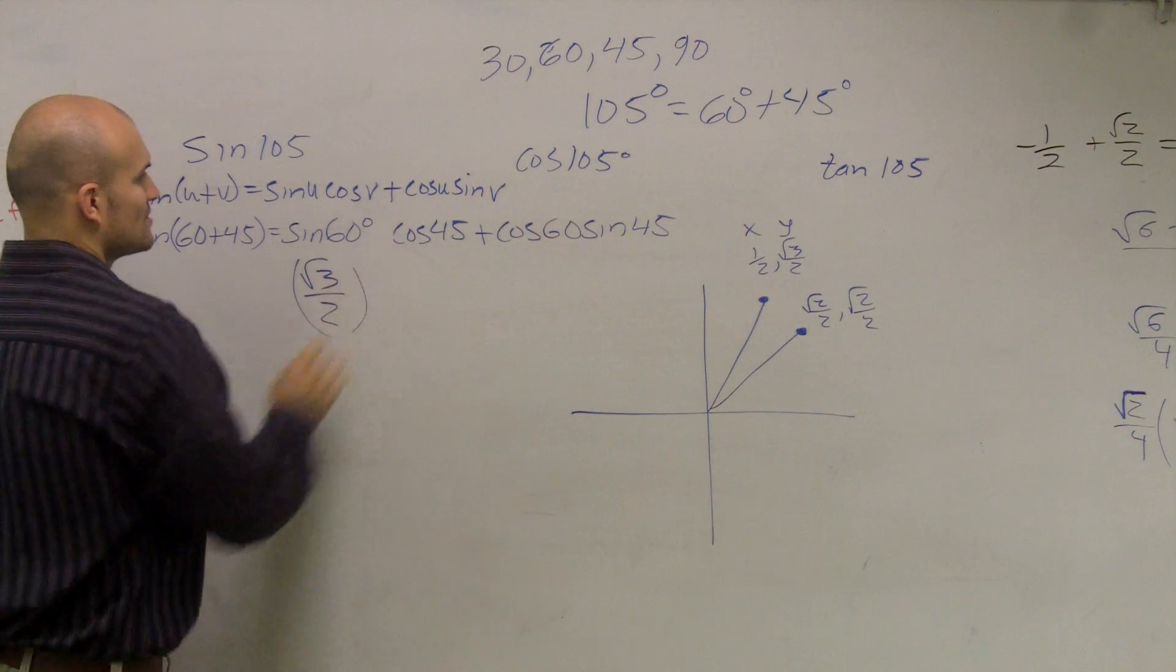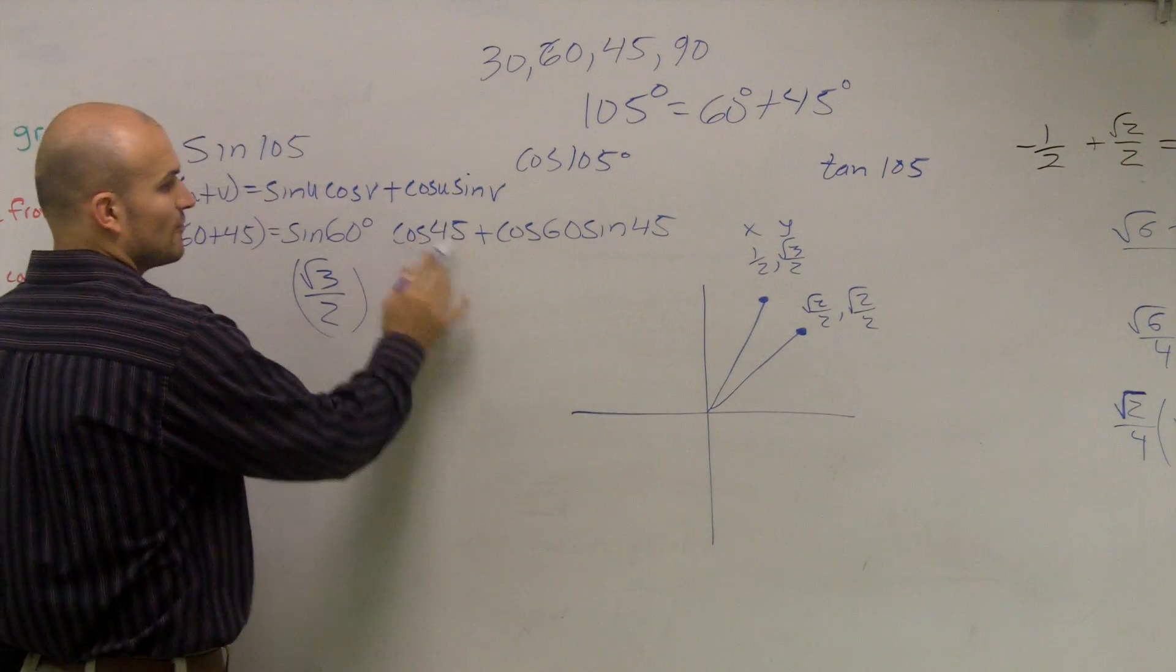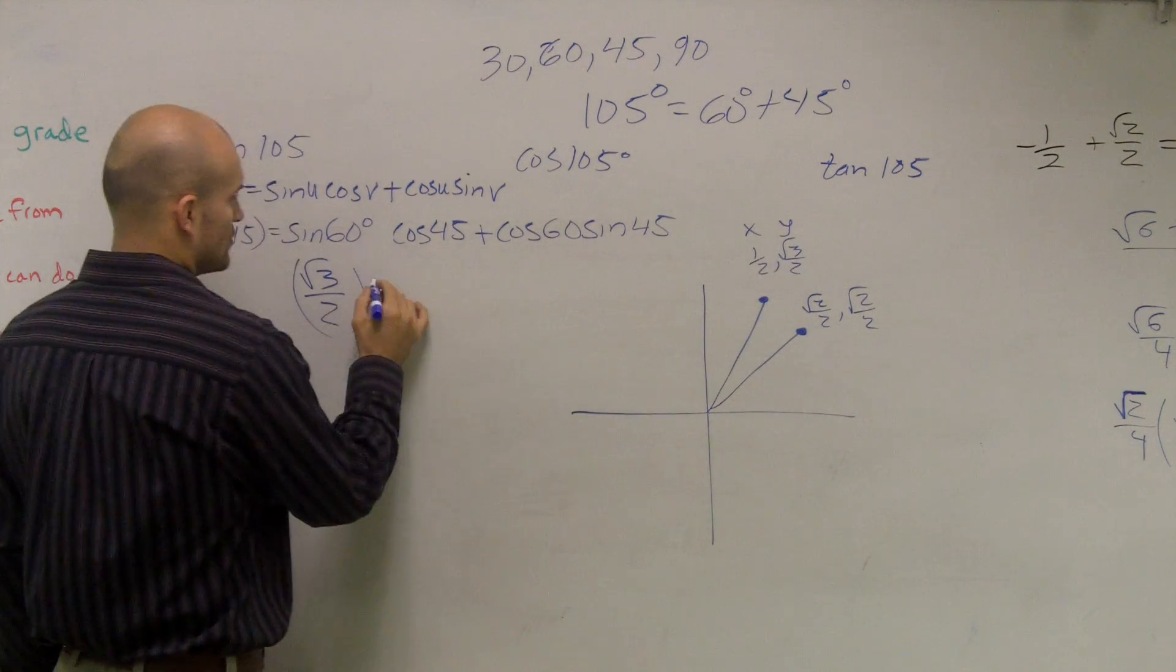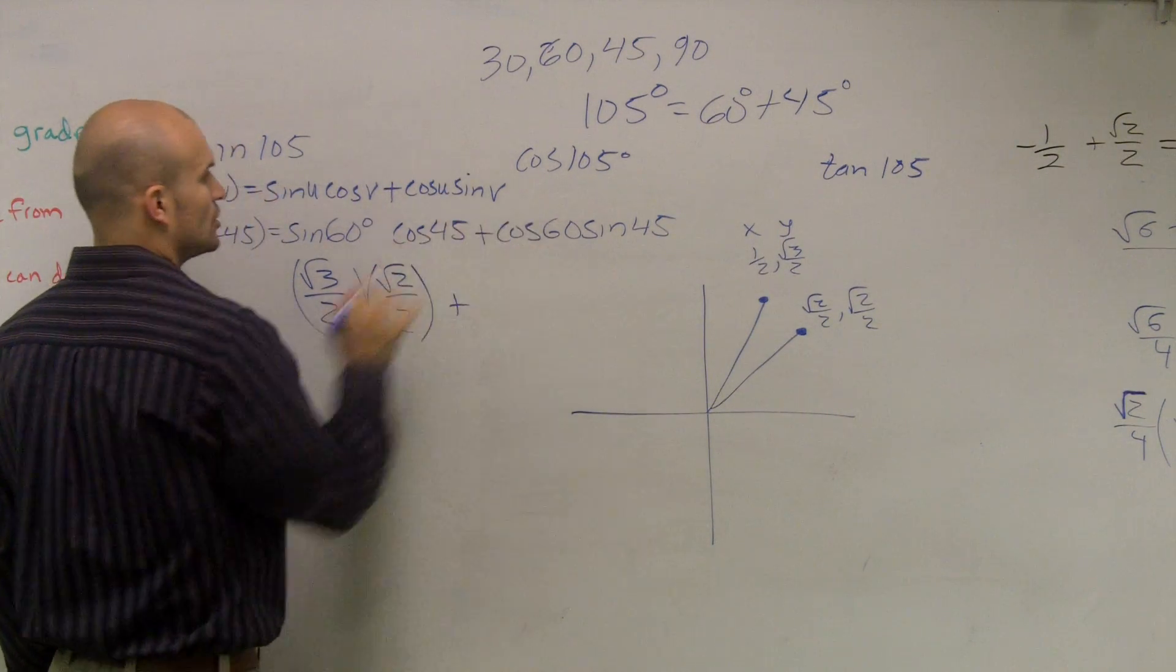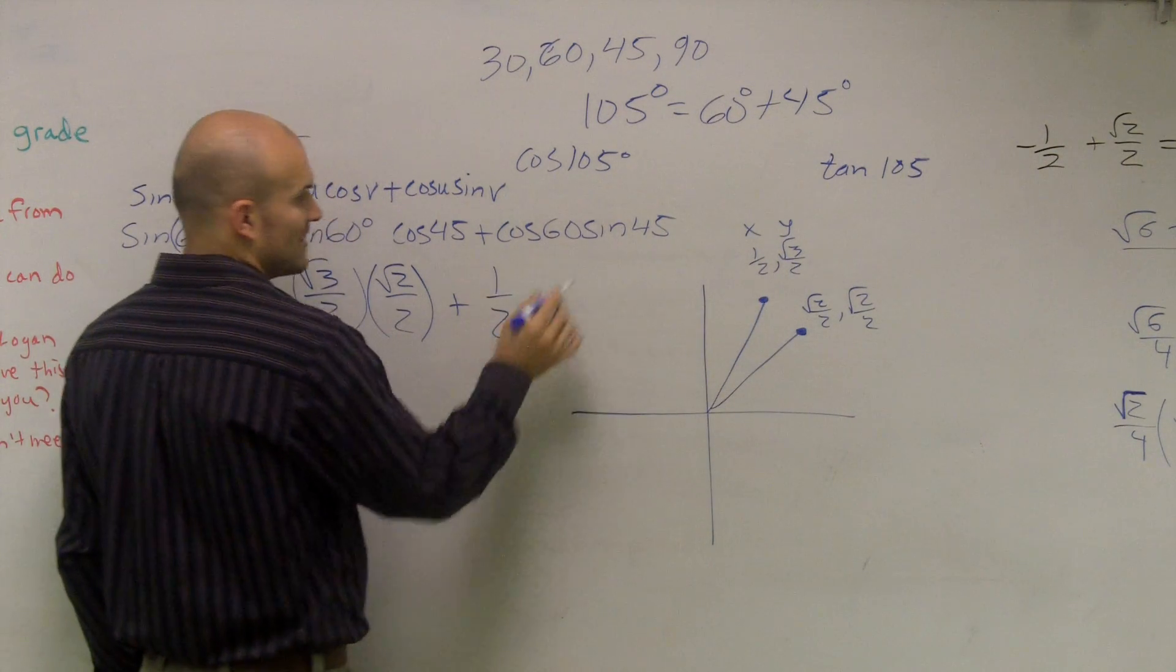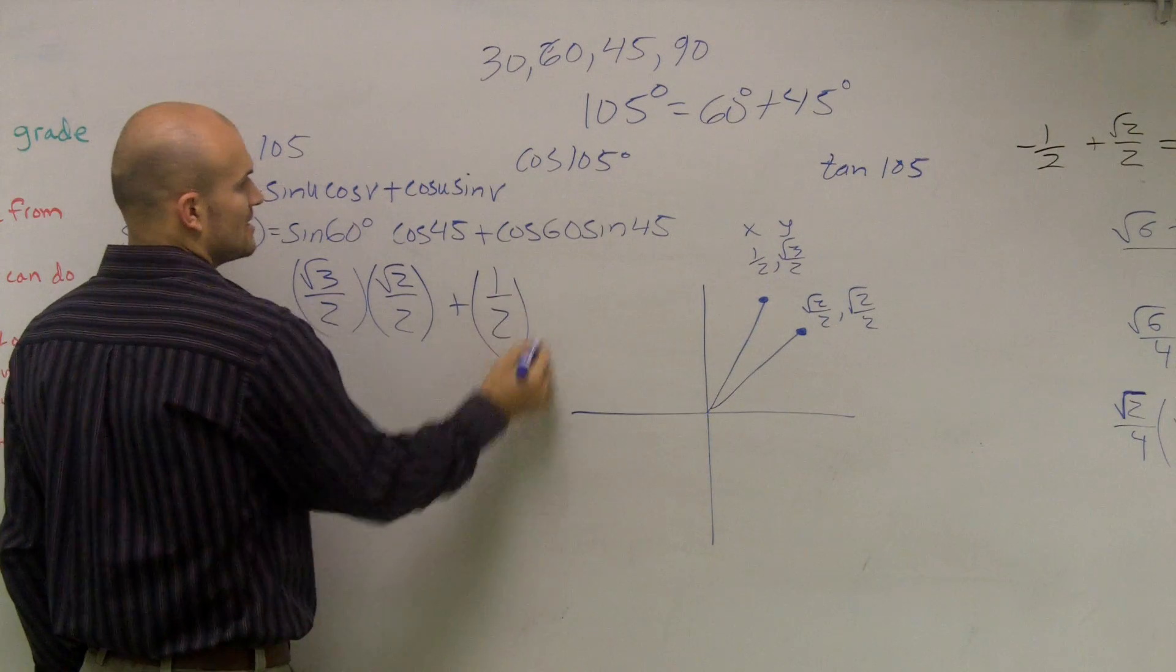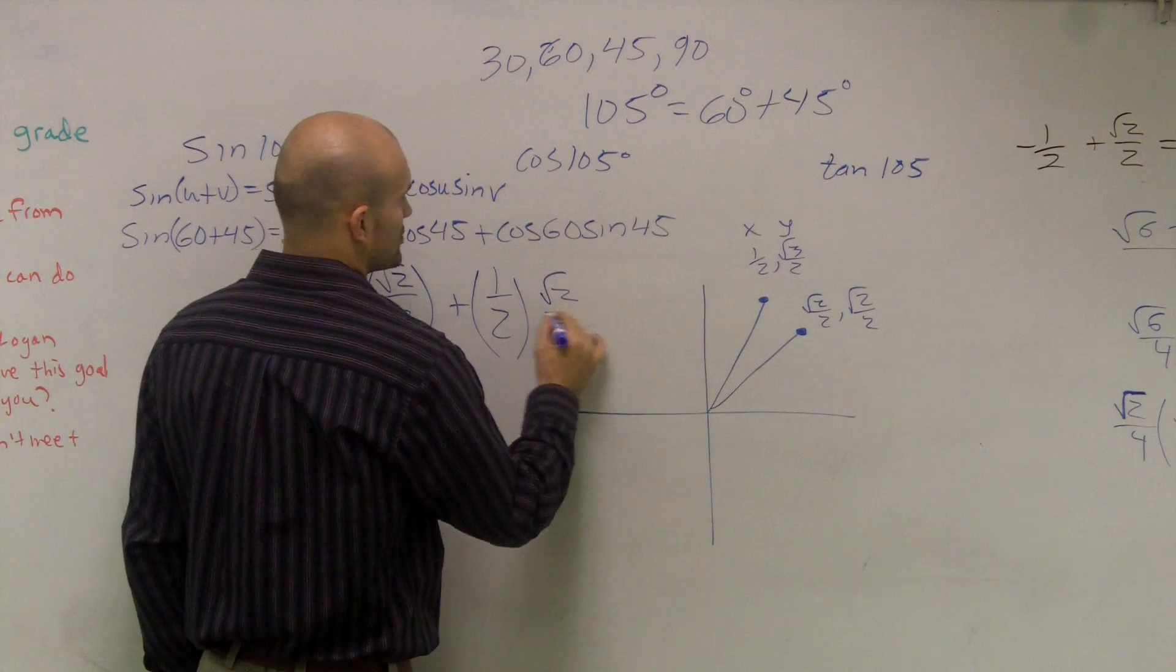I'm not adding. That's cosine of v. Cosine of 45 degrees, which is your x value, which is radical 2 over 2, plus the cosine of 60 degrees, as I look up here, it's going to be my x value, which is 1 half, times the sine of 45 degrees, which is radical 2 over 2.